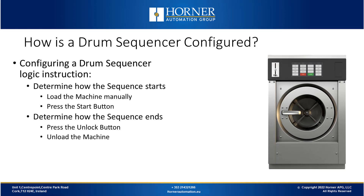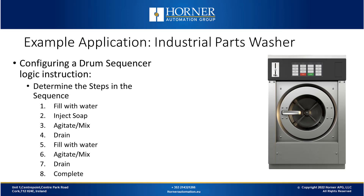Now we look at an example of an industrial washer — a greatly simplified example illustrating how to use a drum sequencer. First we determine how the sequence starts and ends: in this example we start with a start button and end it by pressing a button that unlocks the washer so we can open the door. The steps are: fill with water, inject soap, then agitate and mix for a while, drain, fill with more water, agitate and mix again, and drain again.